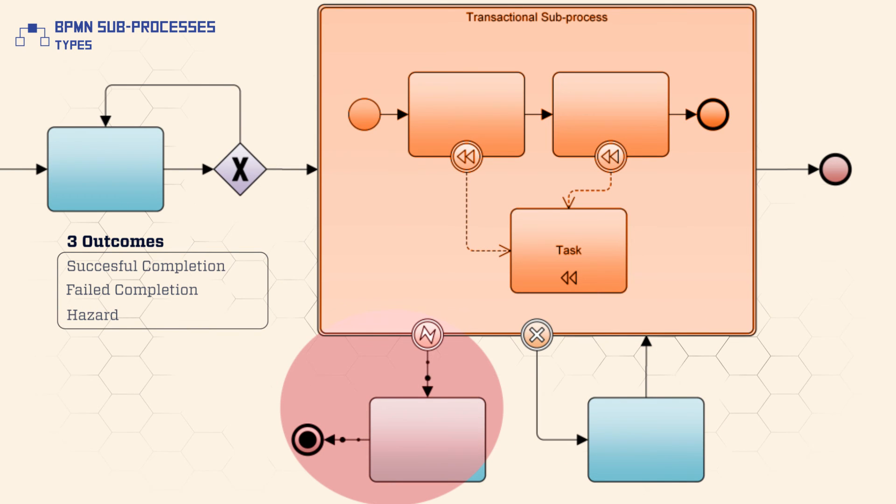Hazard is modeled with a sequence flow starting at an error intermediate event. A hazard means that something went terribly wrong and so a normal success or cancellation is not possible. When a hazard occurs, none of the tasks in the transaction will be executed or compensated.